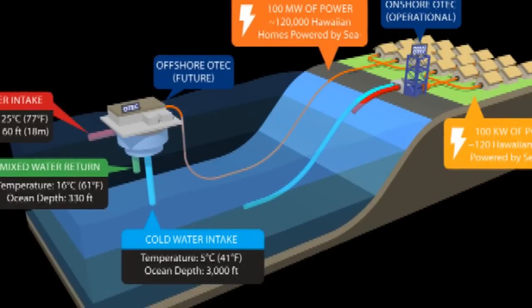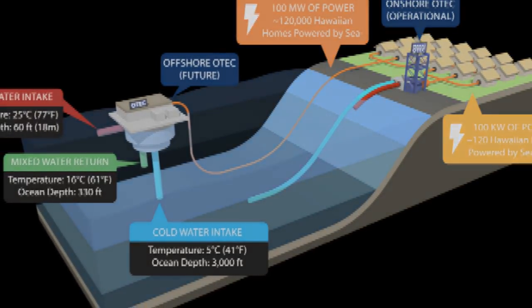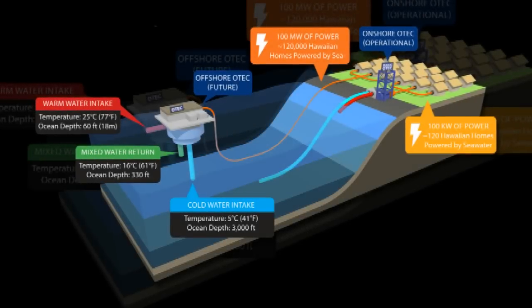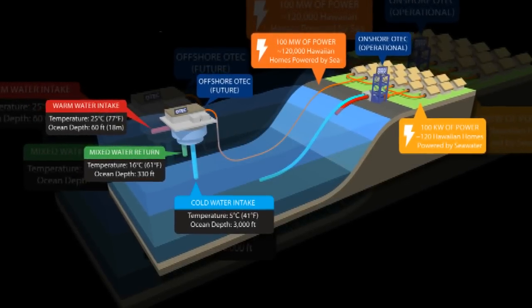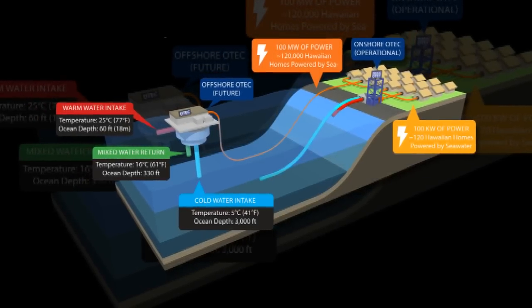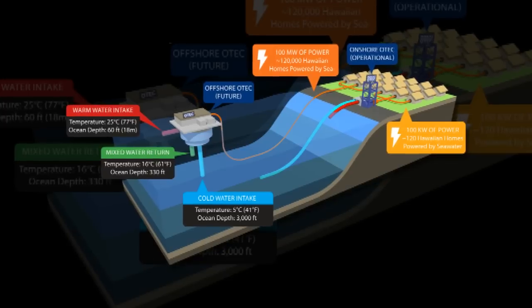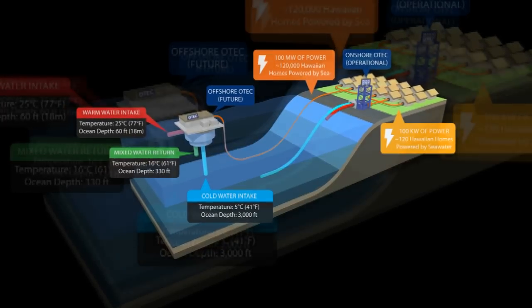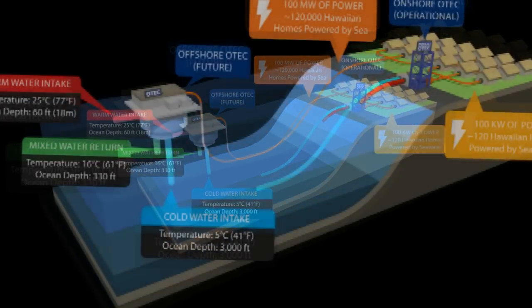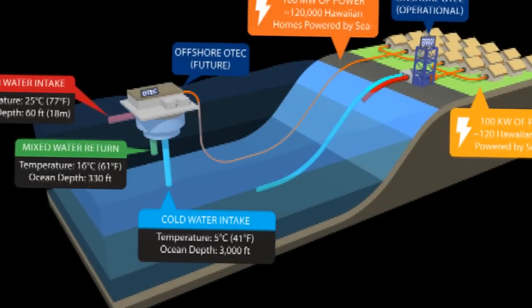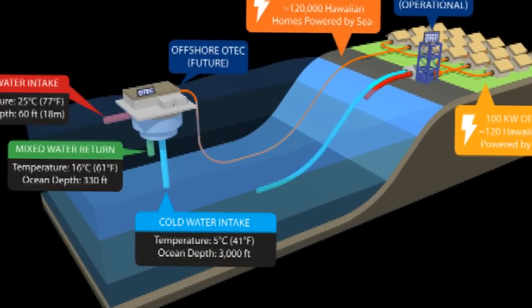Big Island Now said kilowatts of sustainable, continuous electricity will be generated by the site plant. While 120 homes is not a large number, the plant is considered significant as a test bed to commercialize ocean thermal energy conversion technology and to bolster innovation.